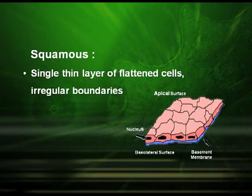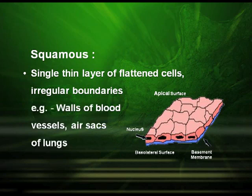The squamous epithelial tissues are a single thin layer of flattened cells, and their boundaries are irregular — they do not have a smooth boundary wall. Examples are the wall of the blood vessels and the air sacs of the lungs.